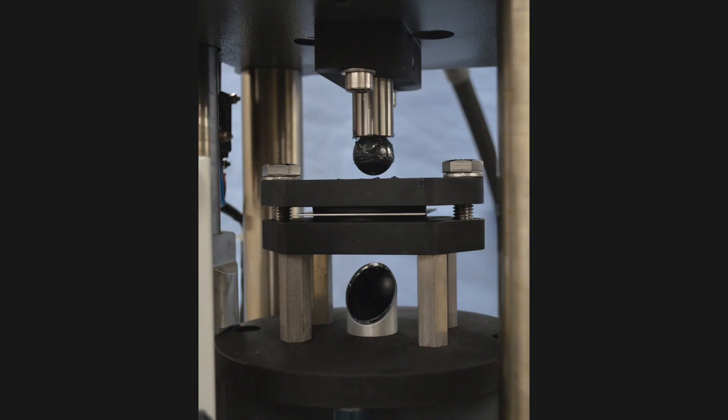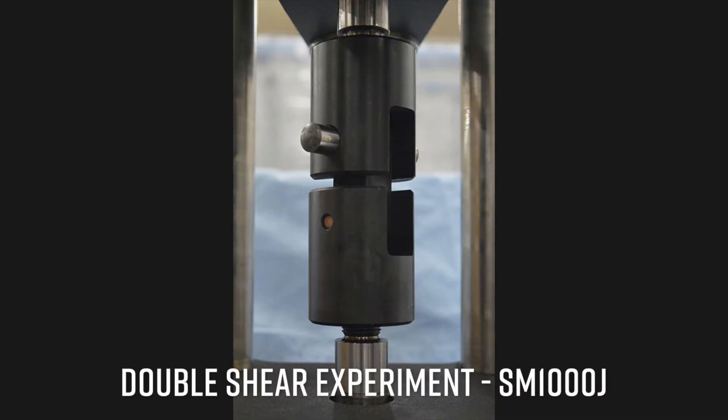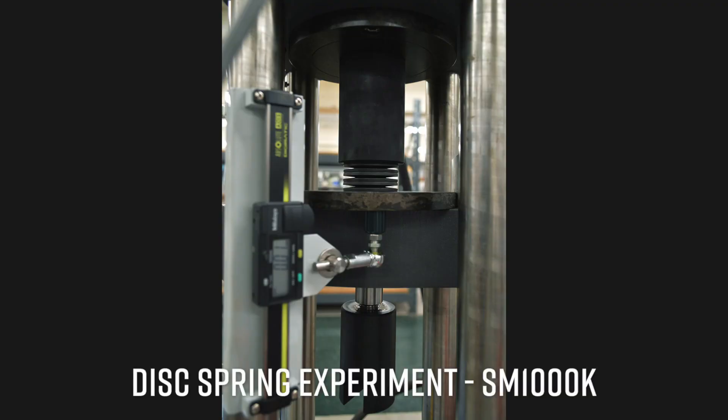The cupping experiment, the SM1000H, for understanding the limits of cold form sheet metals. The double shear experiment, the SM1000J, for determining shear strength of small round rods. And the disc spring experiment, the SM1000K, for understanding the impact of different disc spring stacking arrangements.